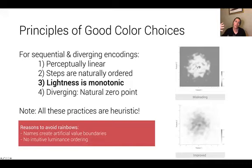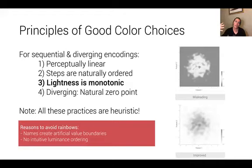You'll also notice situations where we have a dark outside and a dark inside even though these are two extremes of our data. This is especially problematic for folks suffering from color vision deficiencies, because this violation of lightness means they may have to rely on hues, and their ability to distinguish hues isn't as well tuned and may vary significantly between individuals. So in general, avoiding the rainbow is a really good idea.